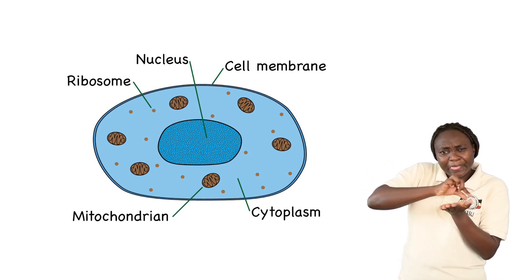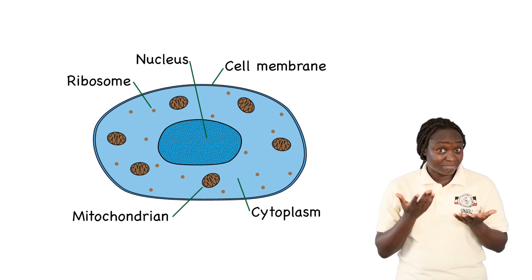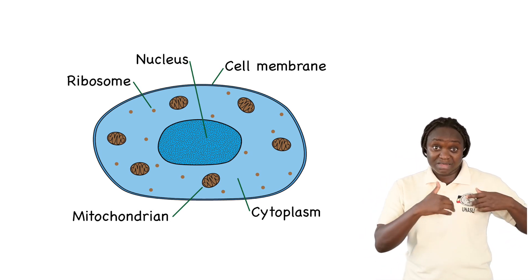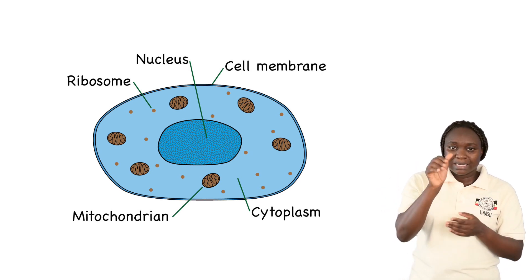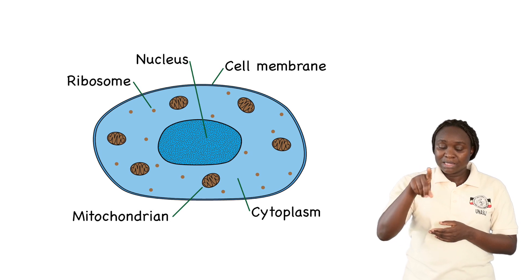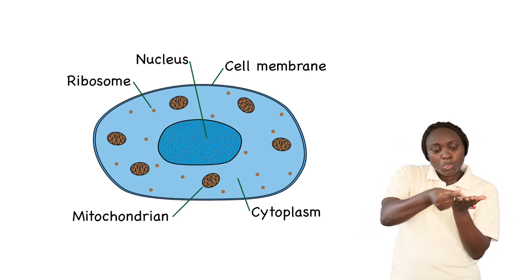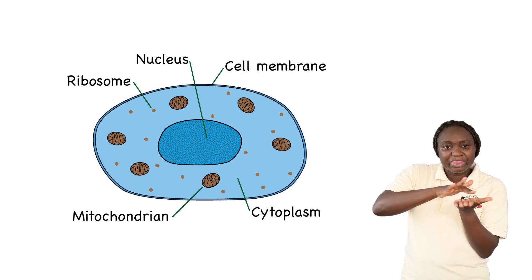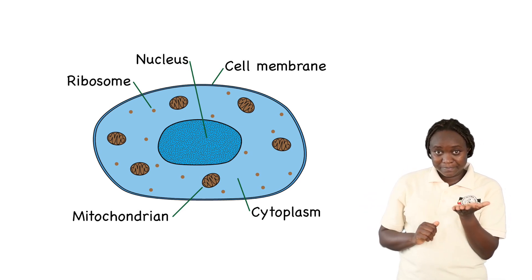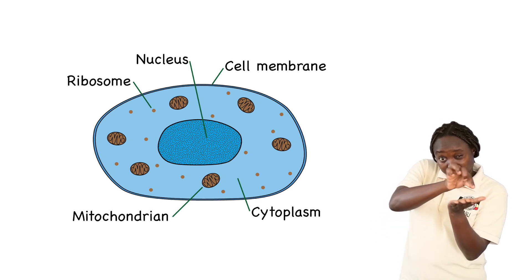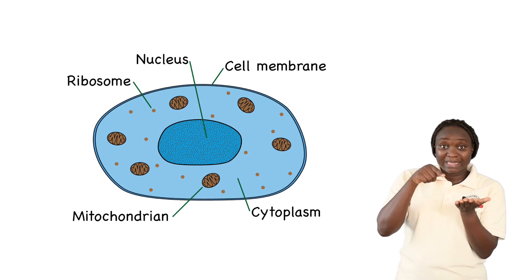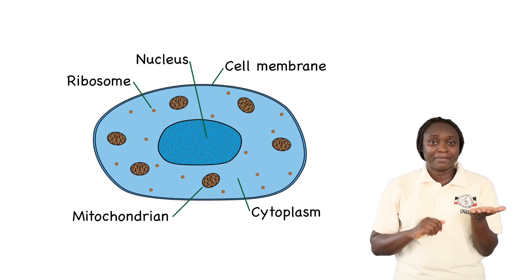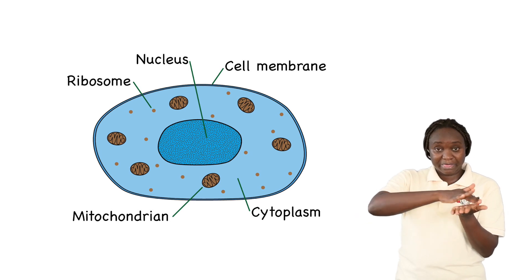Would you like to know those parts? For the animal cell, the outer layer is called the cytoplasm. Can you say that after me? Cytoplasm. Next, the layer surrounding the cytoplasm — which is the thinner outer layer — is called the cell membrane. Can we say that together? The cell membrane surrounds the cytoplasm.